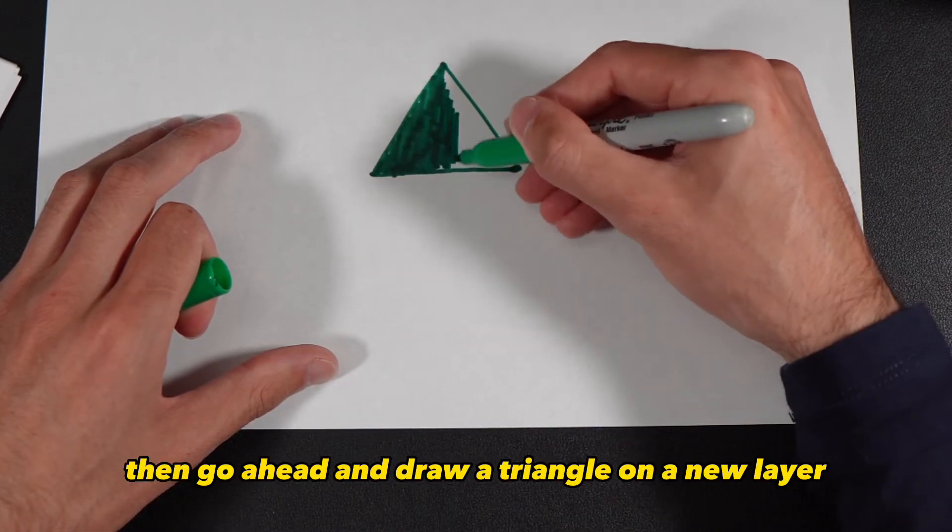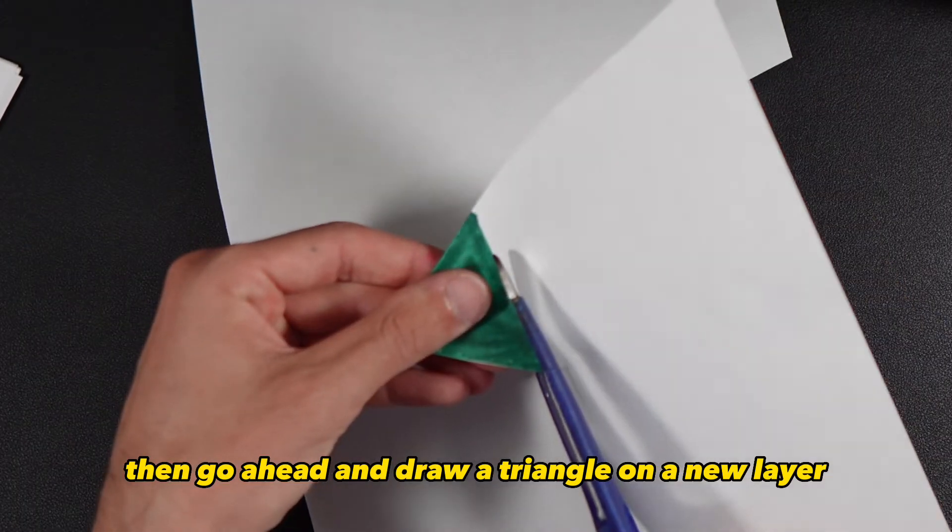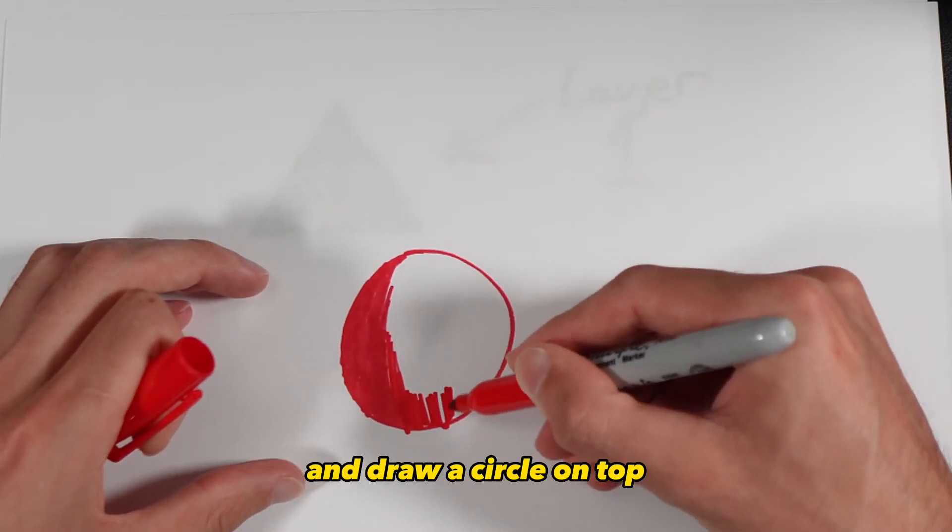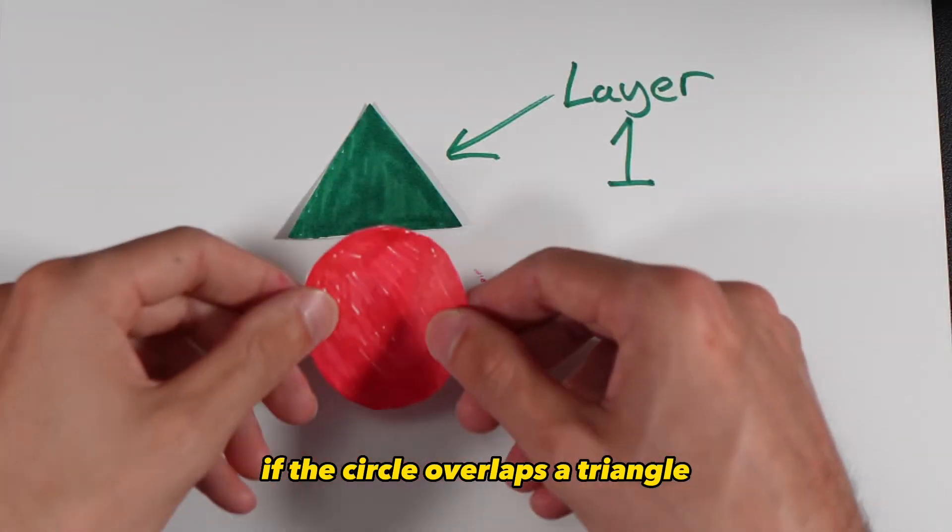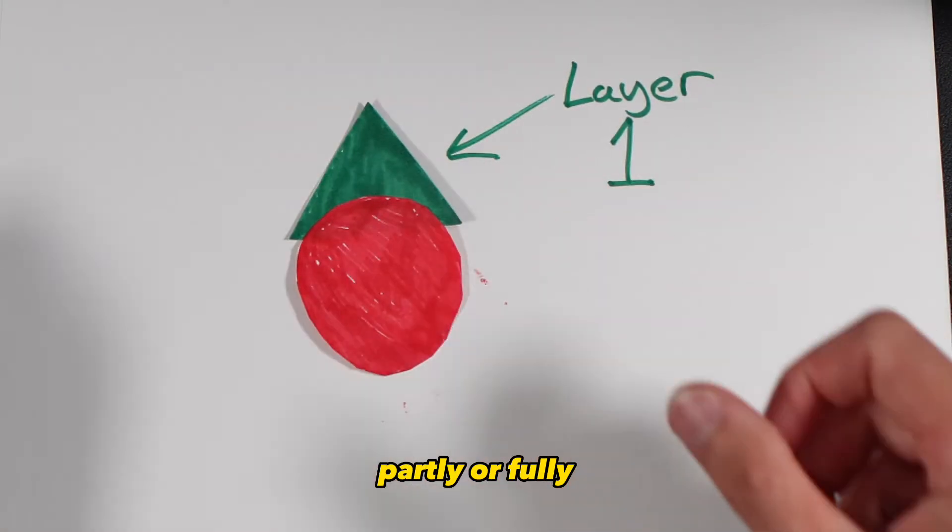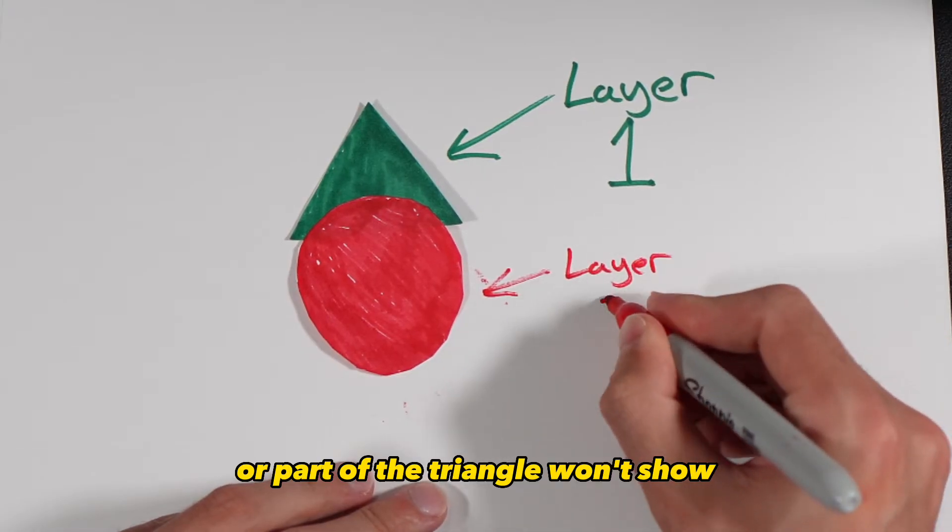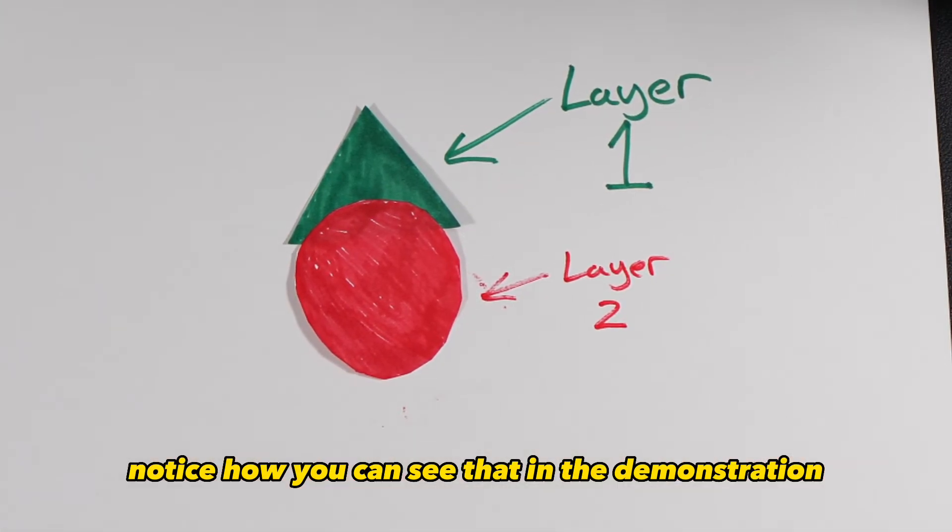If we were to draw a triangle on a new layer and then place a new layer above it and draw a circle on top, if the circle overlaps the triangle partly or fully then the triangle won't show or part of it won't show. Notice how you can see that in the demonstration.